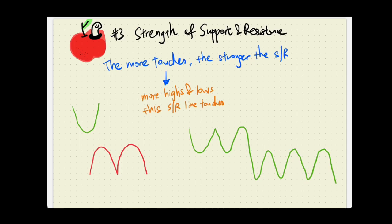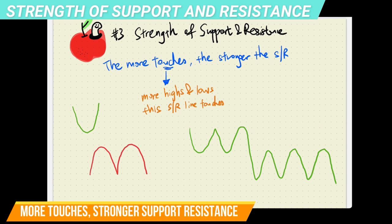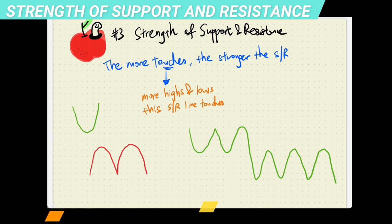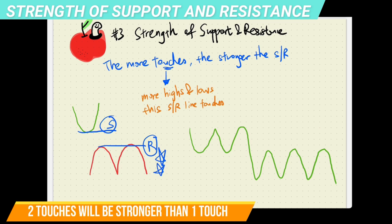The third concept about support resistance is how to know whether a support or resistance is strong — that's the strength. The theory is: the more touches, the stronger the support resistance. What is the meaning of touches? The more highs or lows that this particular support resistance is made up of, the stronger it will be. For example, a support with one touch is weaker than a resistance made up of two touches. So the resistance would be stronger here — two touches is definitely stronger than one.